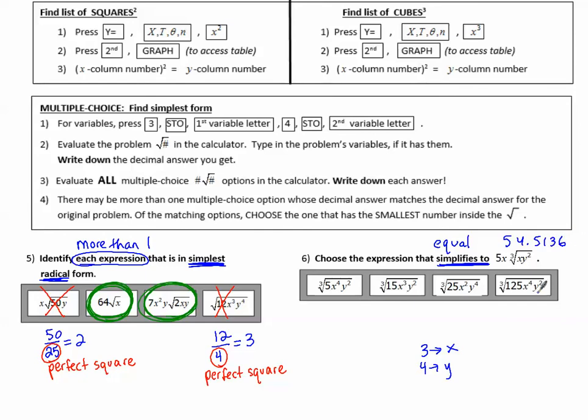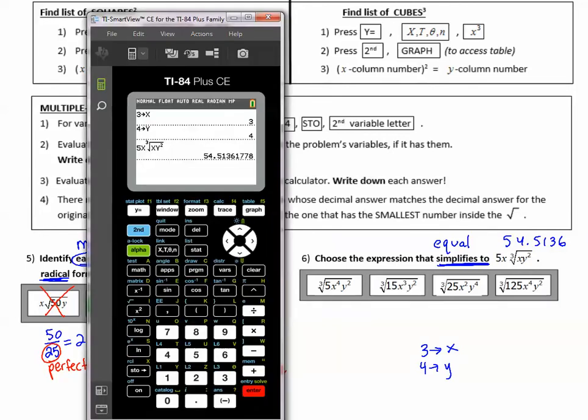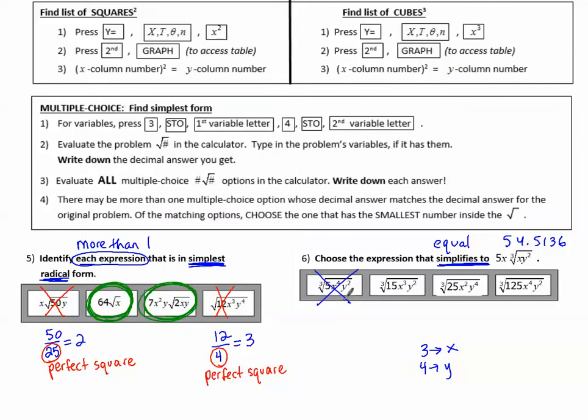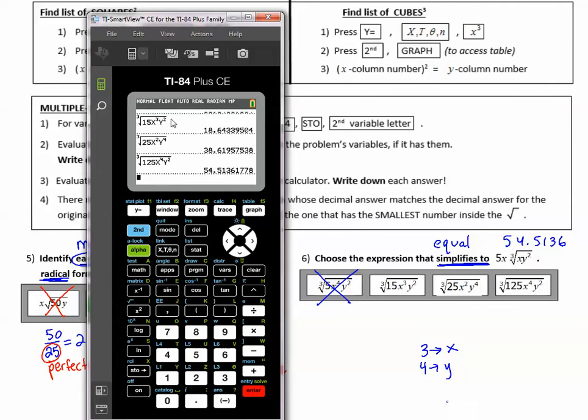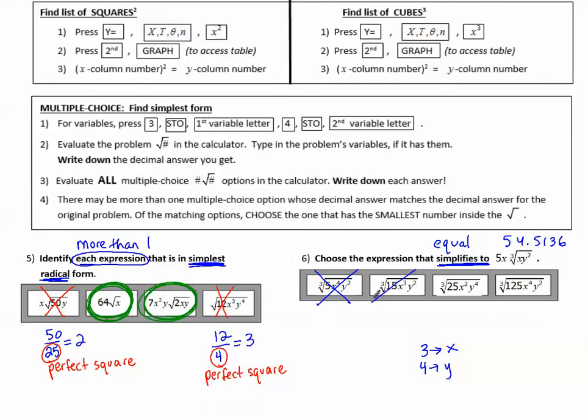Now we can see which of these is the same as this, because if it's the same, it would simplify to that expression. So I'm going to type in each one of those. And when it's like this, where we can select them, it might be more than one, so we do have to type all of them in. Math 4 for cubed root, 5x to the 4th, exponent 4, arrow out of the exponent, and then alpha 1 for y squared. This does not match, so this is not an expression that simplifies. After typing in all of them, I see that the only correct choice was the last one, 54.5136, just like this value. So the other ones did not match. This is the expression that matches.